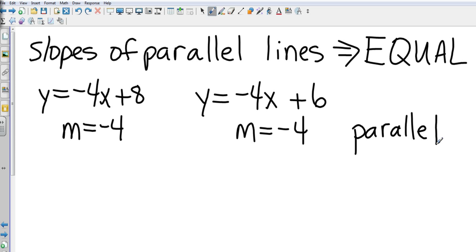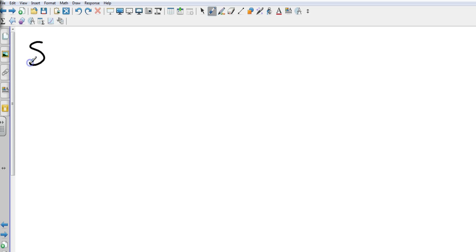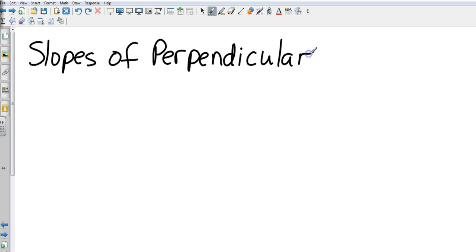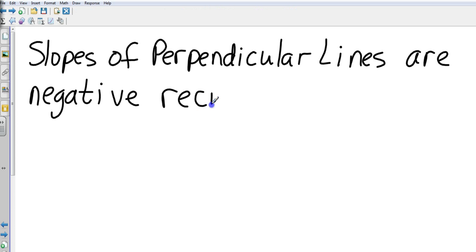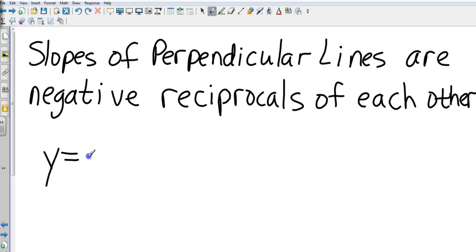So our other term is going to be perpendicular. So slopes of perpendicular lines are negative reciprocals of each other.